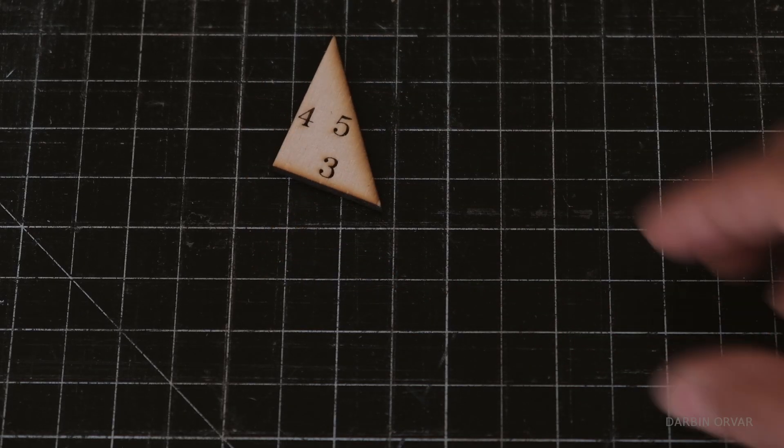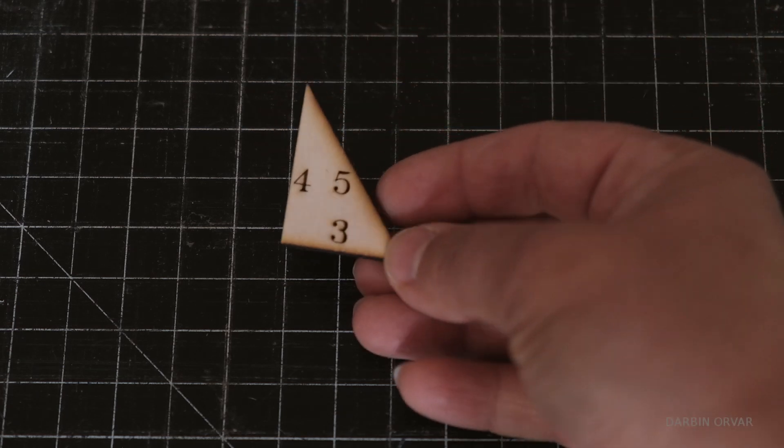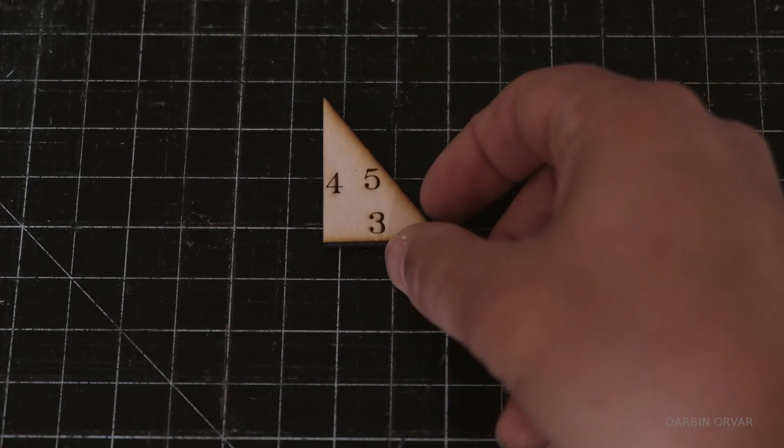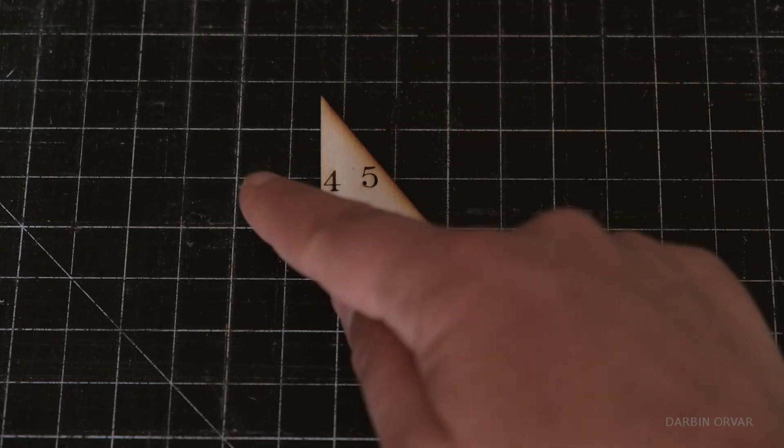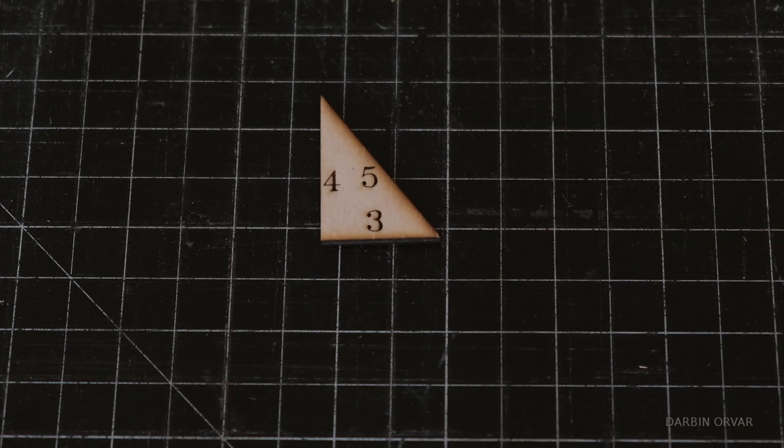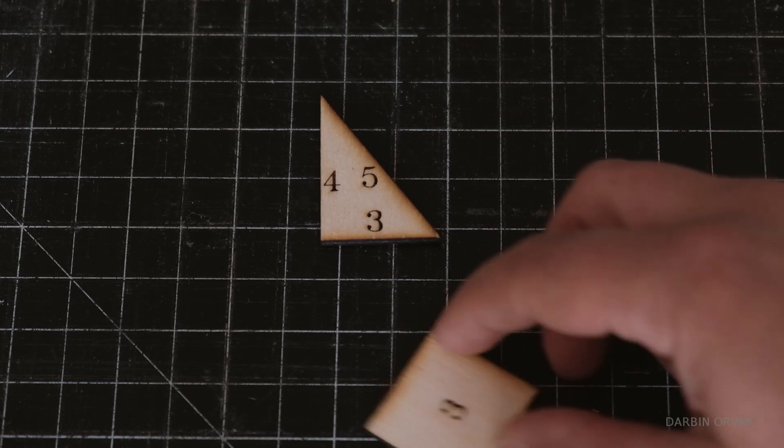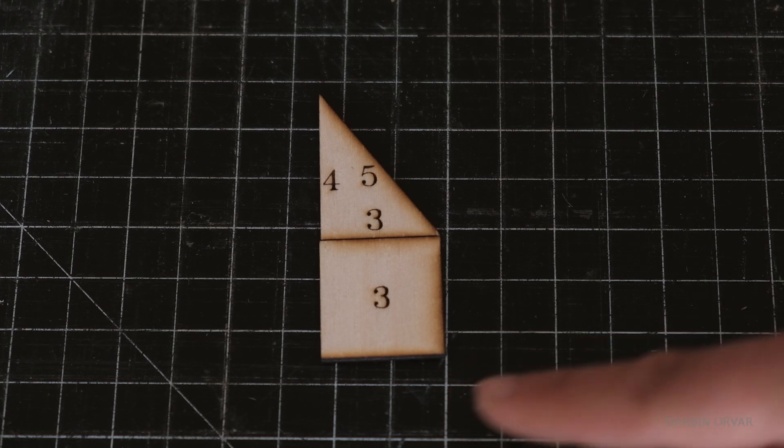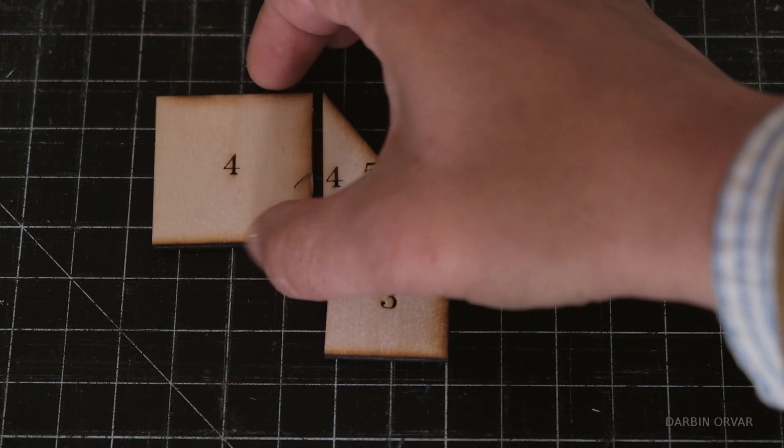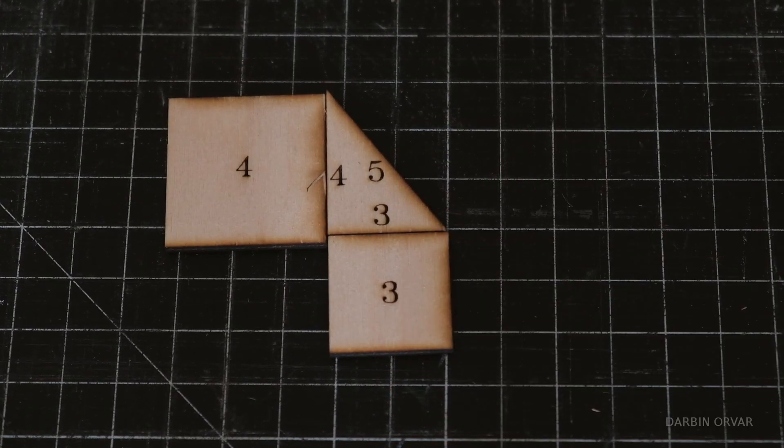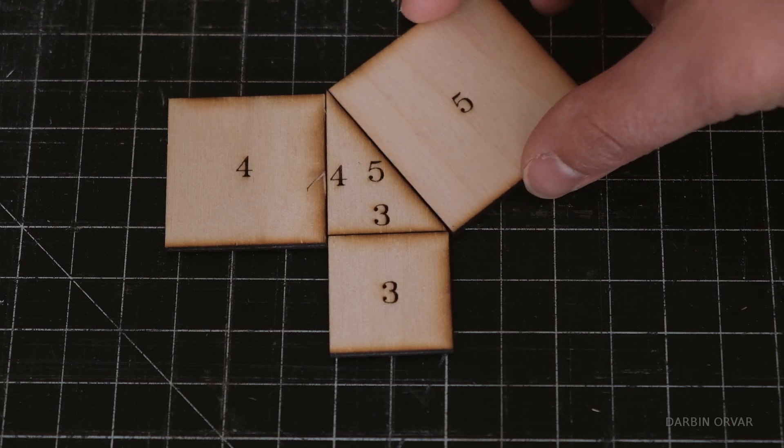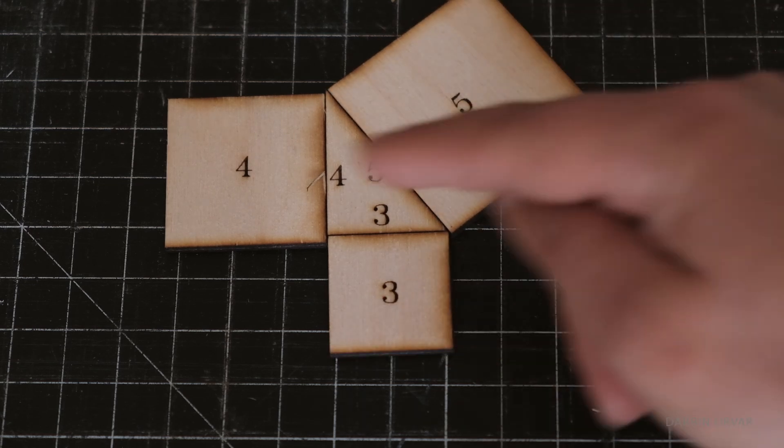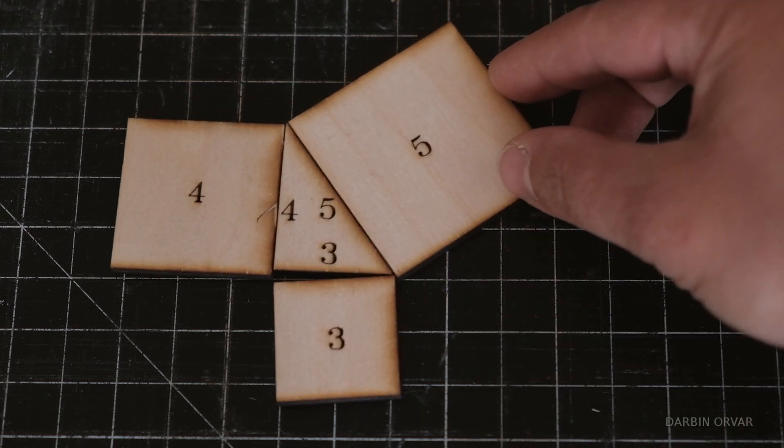So this one right here is the Pythagorean theorem. Mentally it can be kind of hard to understand how a squared plus b squared equals c squared. We have a little visual aid here. Three squared looks like this, plus four squared which looks like this, actually equals five squared. So you can visually see how much larger that is.